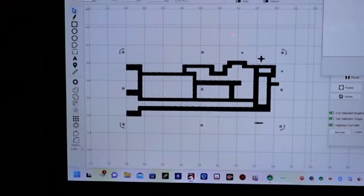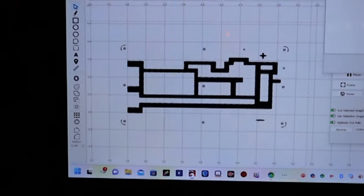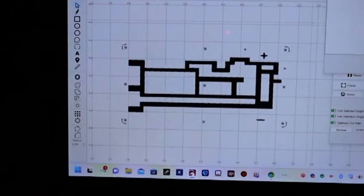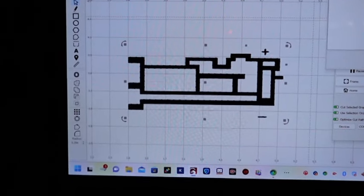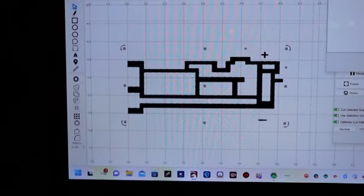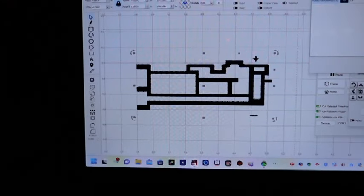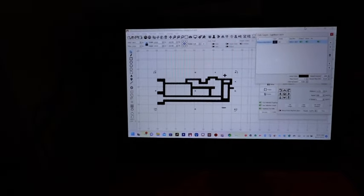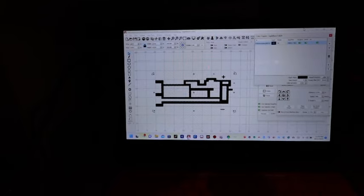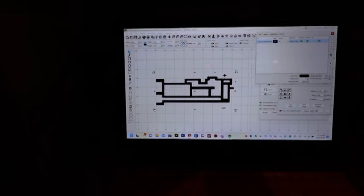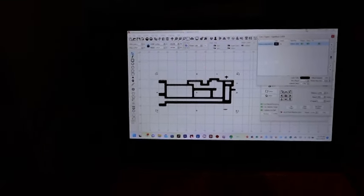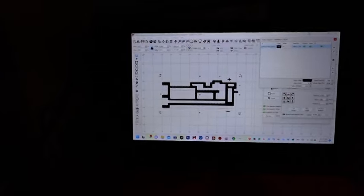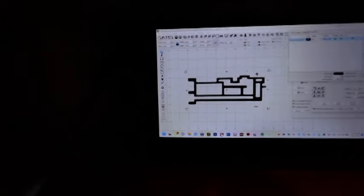But the laser will come on and burn where the black is. Now you can either do trace or fill. Well, the trace does exactly that. It goes around and traces the image. And if you want to fill, it goes back and forth, left and right and exposes whatever is black. When it hits a white section, it stops. The laser shuts off until it hits another black section.